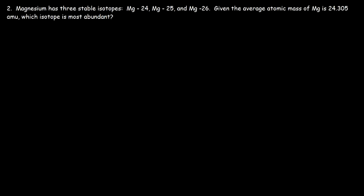Magnesium has three stable isotopes: magnesium-24, magnesium-25, and magnesium-26. Given the average atomic mass of magnesium is 24.305, which isotope is most abundant?